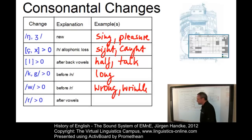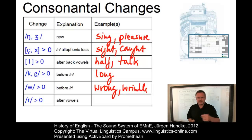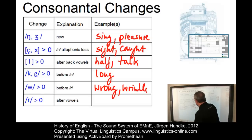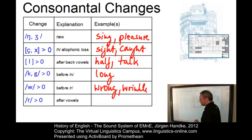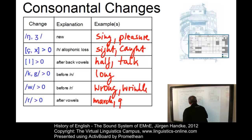The last change affected the degree of rhoticity, which became lower and lower as English developed towards present-day English. In the 18th century, the post-vocalic /r/ was lost in words such as 'march' — 'march' became 'march' — or 'quarter' became 'quarter'.